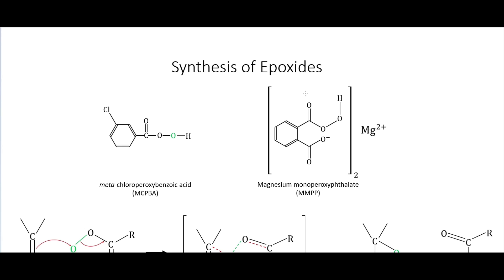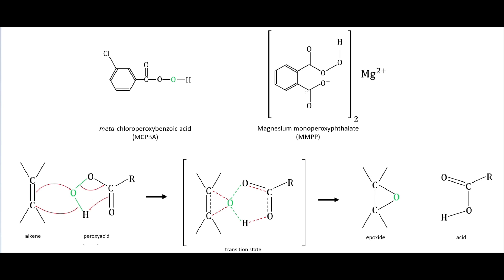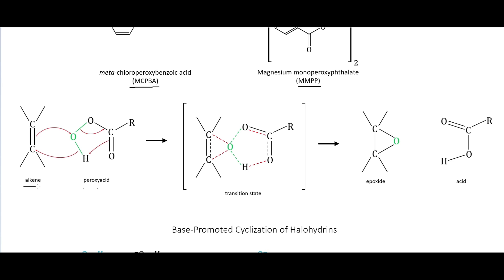As part of the review, we can do synthesis of epoxides using peroxy acids. MCPBA and MMPP are two very common ones to use. We go through this reaction where we have an alkene and our peroxy acid. The electrons from the alkene go to this oxygen, while the electrons from this O-H bond go to this carbon right here. These electrons move around so that we end up with this transition state, and then we end up with this epoxide and this acid right here.